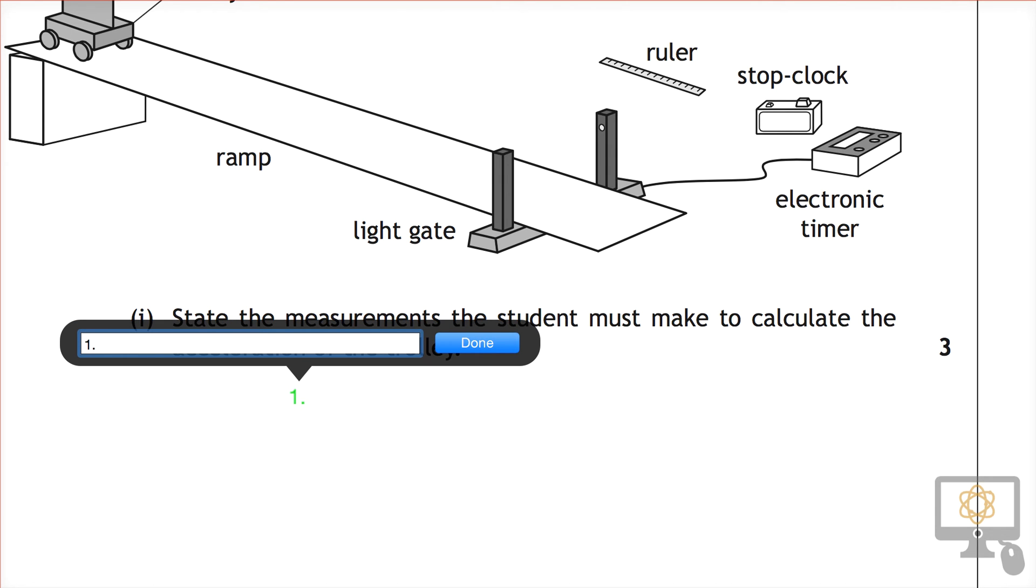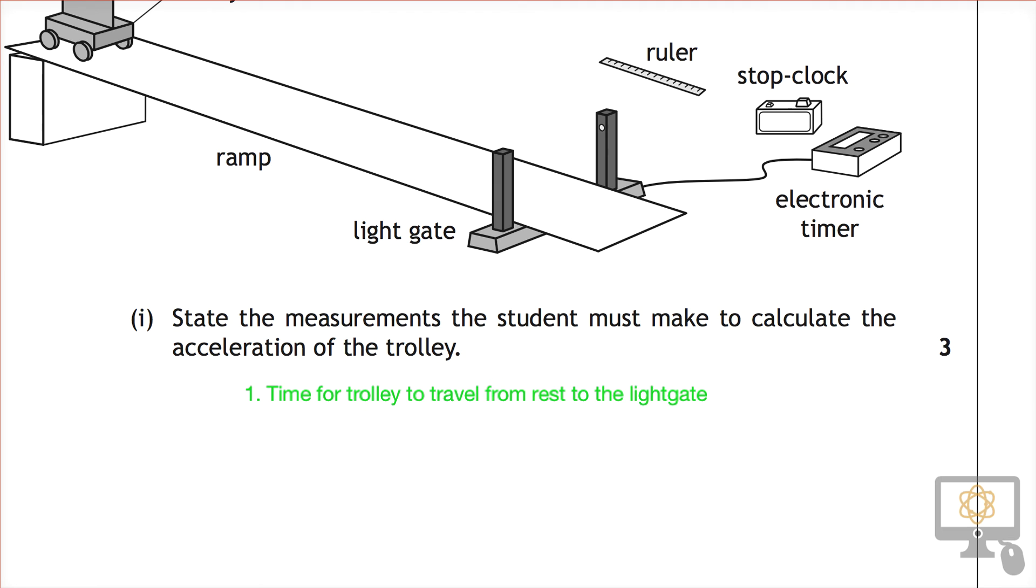One: time for trolley to travel from rest to light gate. Okay, so that's the first measurement.